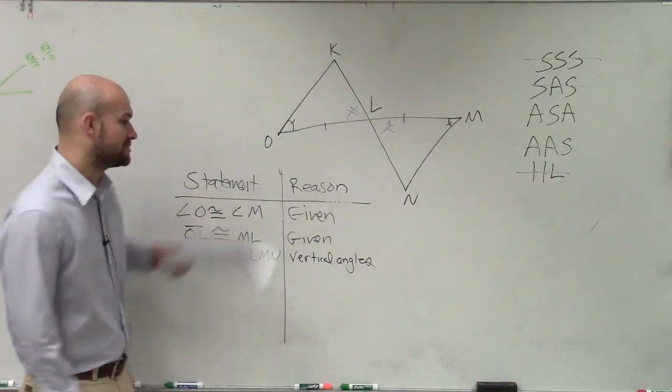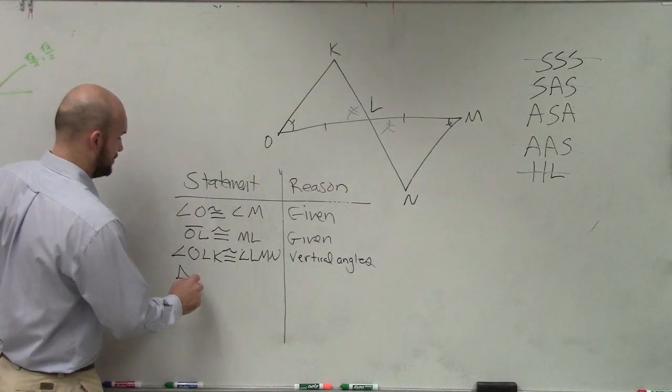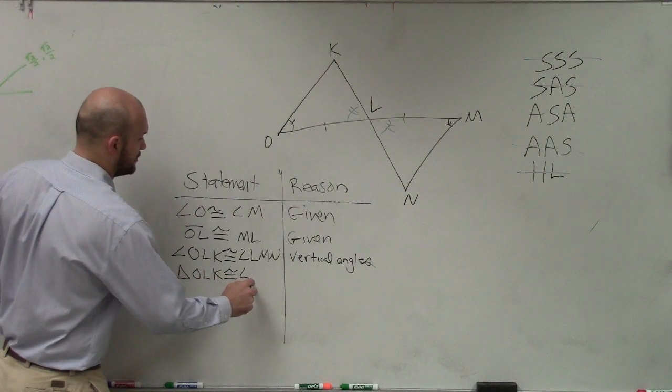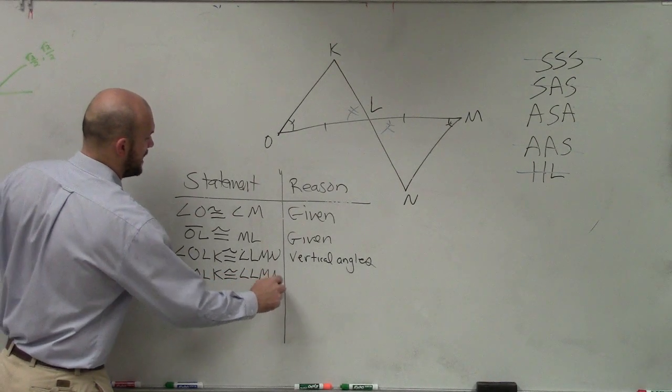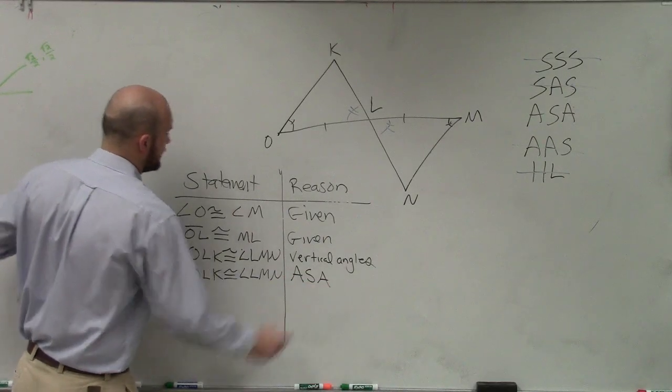So now, ladies and gentlemen, now I can show that these two triangles are congruent. So now, I can say triangle OLK is congruent to triangle LMN. Why? Because we have angle, side, angle.